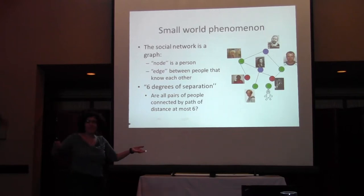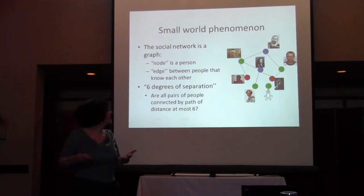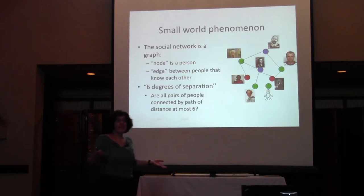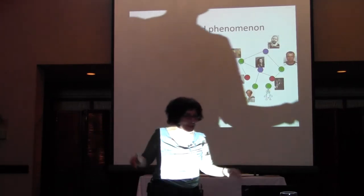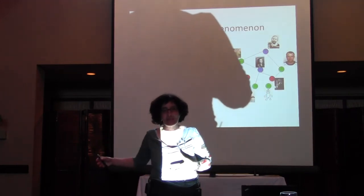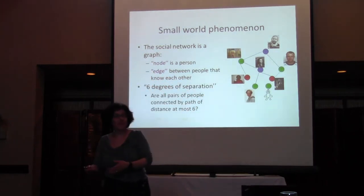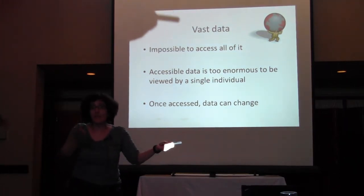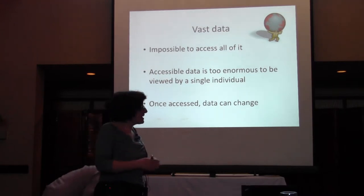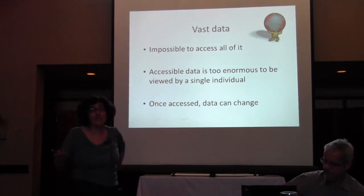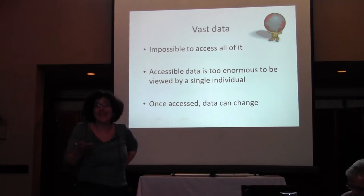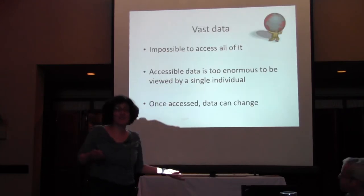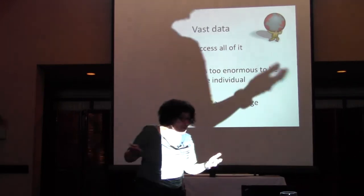We've all heard of the small world phenomenon, the six degrees of separation. There's been a movie, a Broadway play — this is famous stuff. We like to model the world as a graph. Each person gets a node; we put an edge between two people if they've met each other. The six degrees of separation property is the question of whether all pairs of people are connected by a path of distance at most six. How in the world could you check if the world really satisfies this property? Even if you could ask each person who they know, you'd never know if you got all the people — we keep finding unknown groups in the Amazon. So we have a number of problems with vast data.